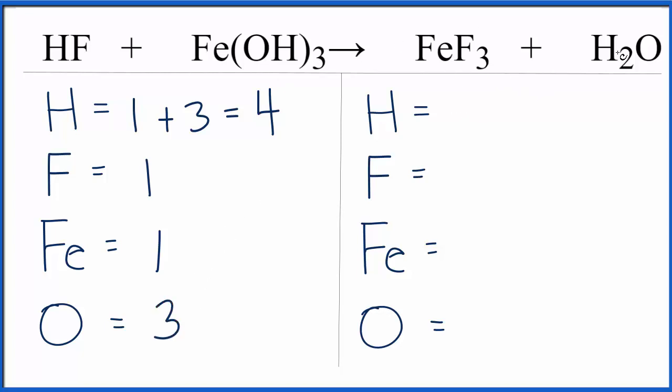Over on the product side, we have two hydrogens, three fluorines, one iron, and one oxygen. So let's do this. Why don't we fix these fluorines first, and then maybe the hydrogens and oxygens, they'll work out. We'll see.